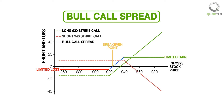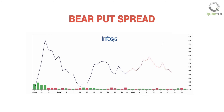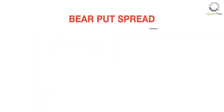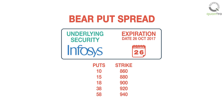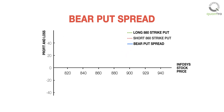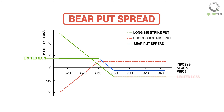The second strategy that we are going to discuss is called the bear put spread. The bear put spread strategy is used when the outlook is moderately bearish. The strategy involves options on the same underlying security, with the same expiration date, but with different strike prices. There are two steps to set up a bear put strategy for the Infosys stock trading at 900 rupees: Step 1, long 880 strike put; Step 2, short 860 strike put. A combination of the payoffs of the long put with strike price 880, and the short put with strike price 860, is the payoff of a bear put spread, shown in blue. As you can see, both the profits and losses are capped.